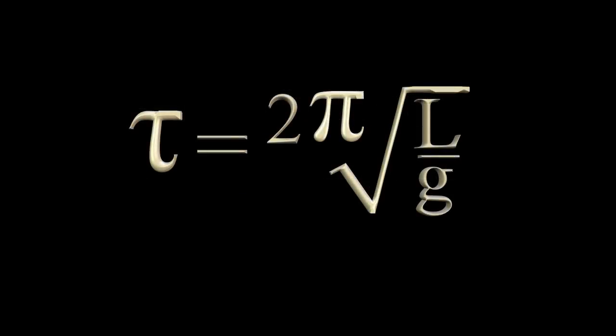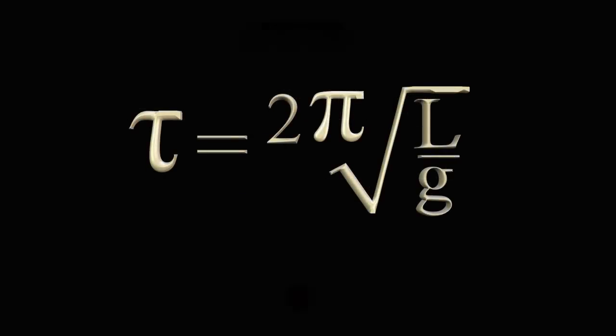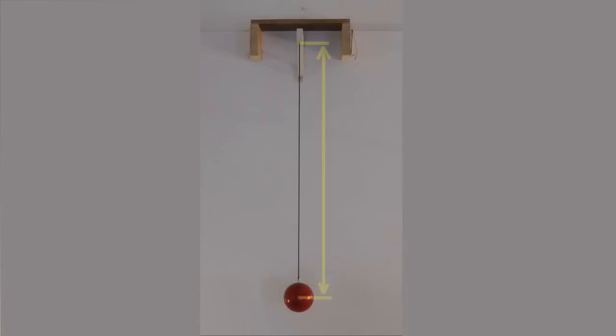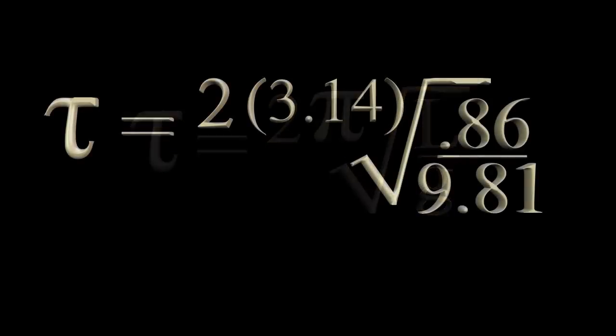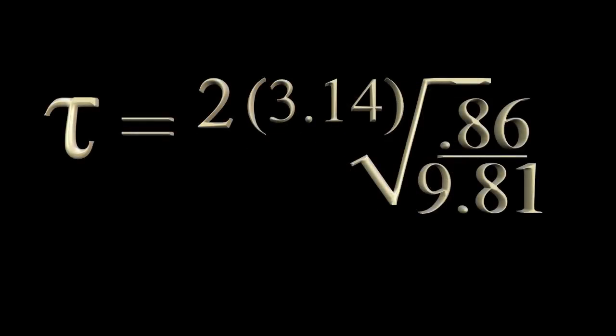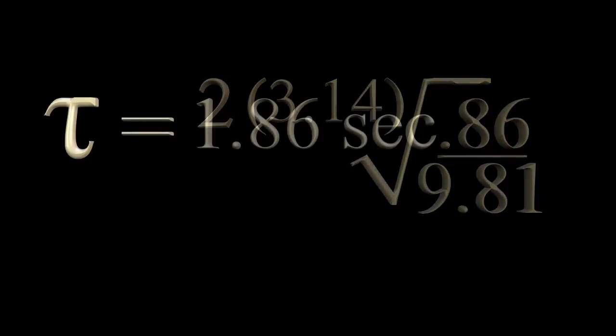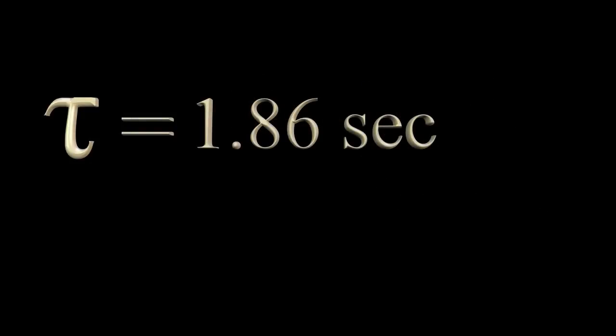Here's how to use this formula. The length of a pendulum is the distance from the pivot point to the center of the bob. This pendulum is 0.86 meters long. To calculate its period, we substitute into the formula like this. Solving for tau, we get a period of 1.86 seconds.